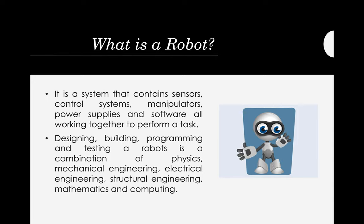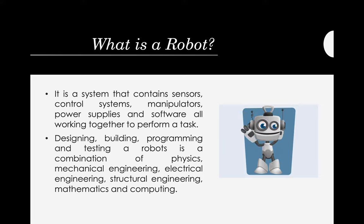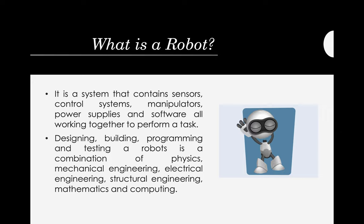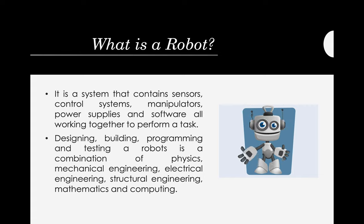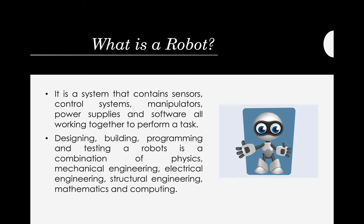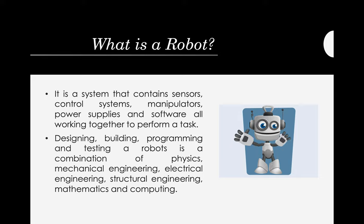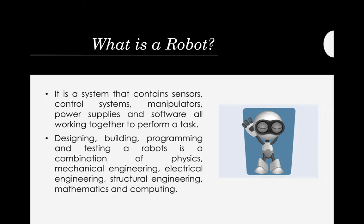So let's talk about what is a robot. A robot is actually a system that contains sensors like ultrasonic sensor, fire detection sensor, and water level sensor, and a lot more. Aside from sensors, we have control systems, manipulators, power supplies, and software all working together to perform a specific task. So what is actually the difference between a robot and a software or an application?